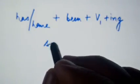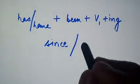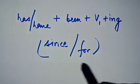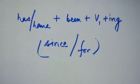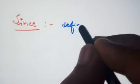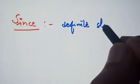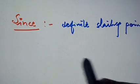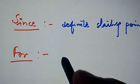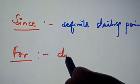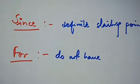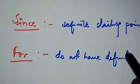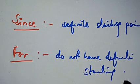We should always use since and for. Since is used when we have a definite or specific starting point, and for is used when we don't have a definite starting point of time.